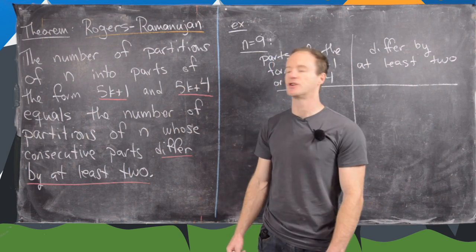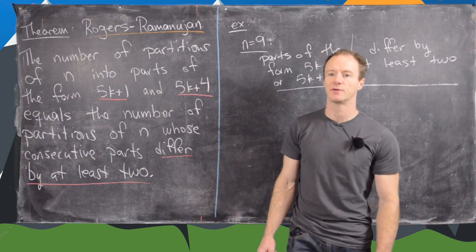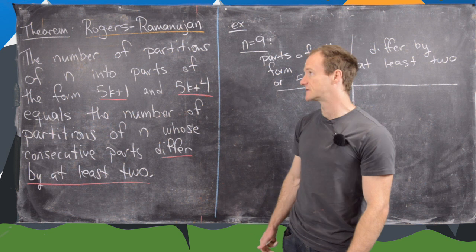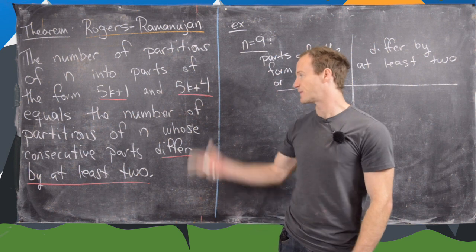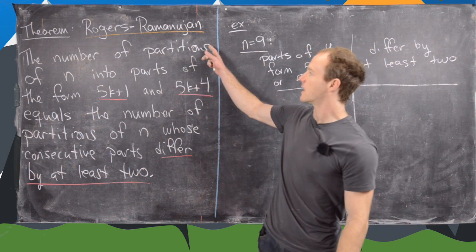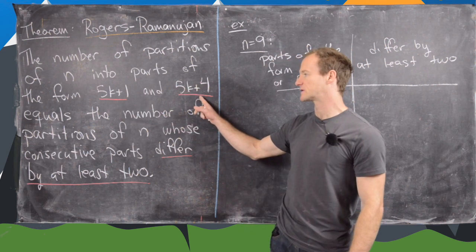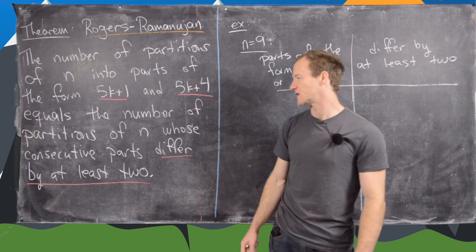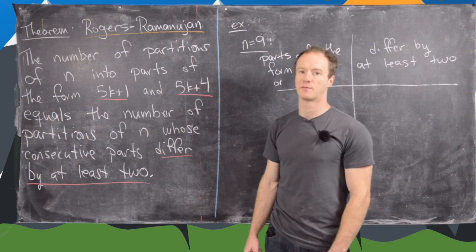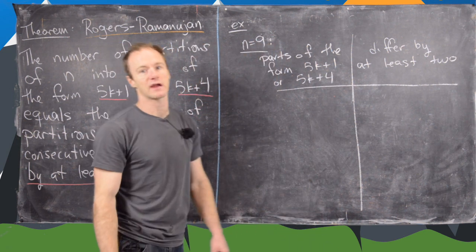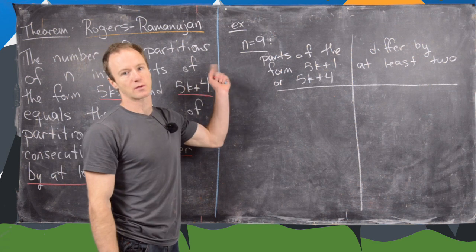We're continuing our exploration of integer partitions in the Rogers-Ramanujan identities, getting close to being able to start doing the proof. In this video, we want to look at a generating function view of these identities. Let's just recall the theorem: the number of partitions of n into parts of the form 5k plus 1 and 5k plus 4 equals the number of partitions of n whose consecutive parts differ by at least two. Before we get going, let's look at an example to remind us how this works.